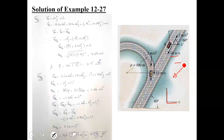The angle is given as 60 degrees with respect to the x-axis. Resolving along the x and y axes, car A has a negative x component and a negative y component. So VA becomes minus 18 cos 60 i minus 18 sin 60 j. This is the absolute velocity of car A.